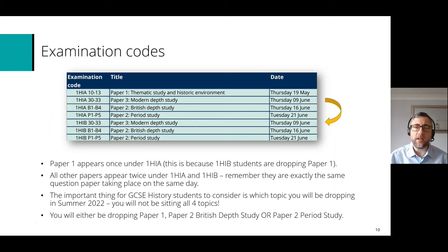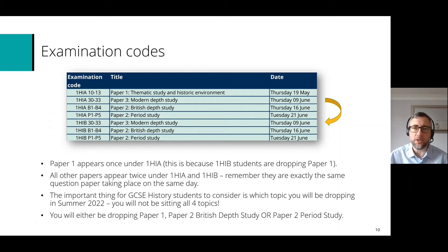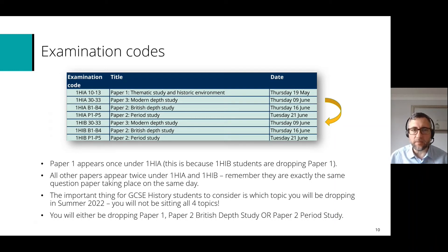As I've highlighted on screen with a little arrow, paper 3 — the modern depth study, which for many students is Weimar and Nazi Germany — takes place on Thursday the 9th of June. It's exactly the same under both the 1HIA and 1HIB codes.